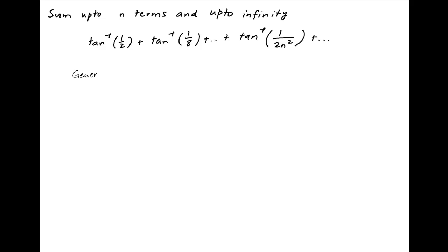Note that the general term of the given series, let's denote it by uk, is equal to tan inverse 1 upon 2k square.